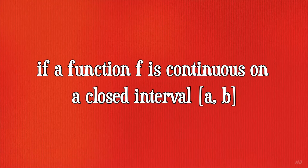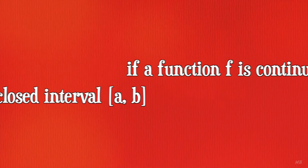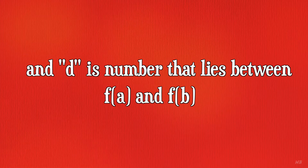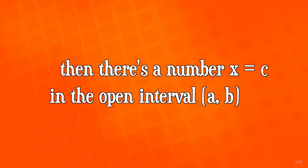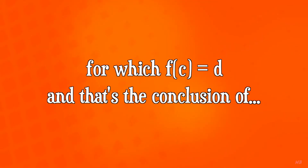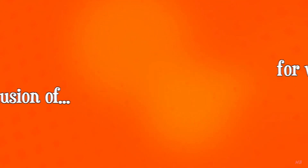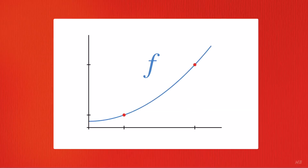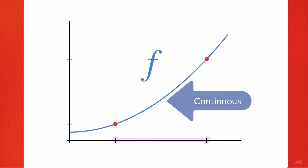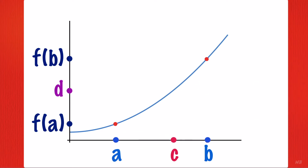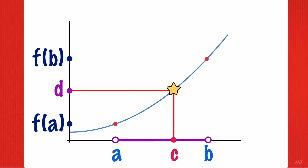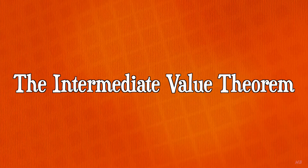If a function f is continuous on a closed interval a to b, and d is a number that lies between f of a and f of b, then there's a number x equals c in the open interval a to b, for which f of c equals d. And that's the conclusion of... you're going to need a value theorem.